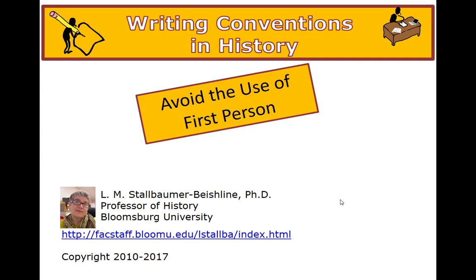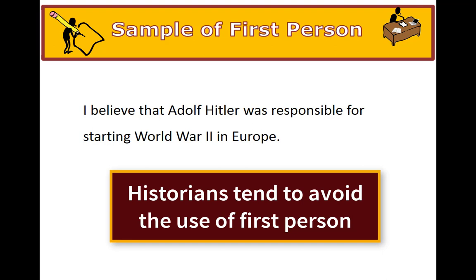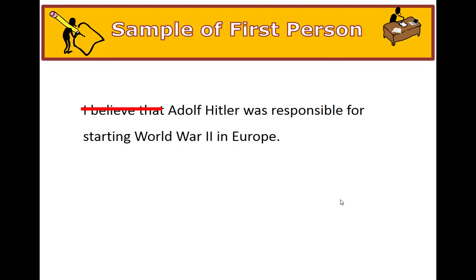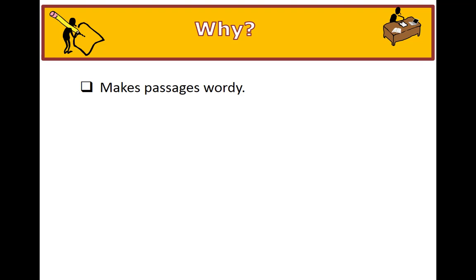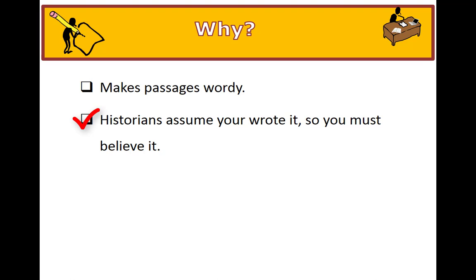Let's talk about how to avoid the use of first-person. Here is a sample: 'I believe that Adolf Hitler was responsible for starting World War Two in Europe.' Notice what happens when we simply cross out 'I believe that.' Why do we avoid first-person? They make the passages wordy, and historians assume you wrote it, so you must believe it.